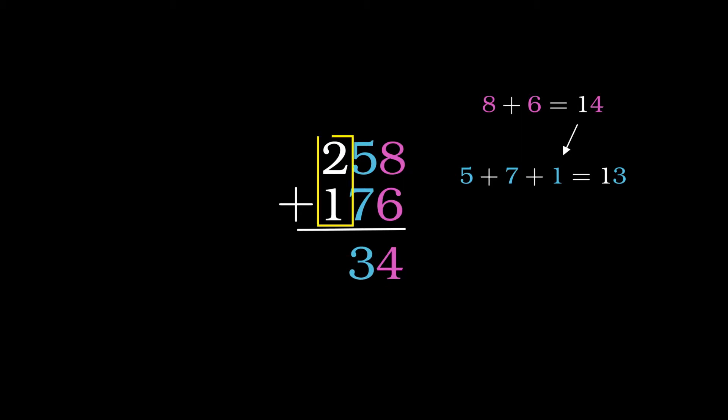Last but not least, the sum of the numbers on the left, but when we take 1 into account, that sum becomes 4 instead. And here we have it, the number that results from adding 258 to 176 is 434.